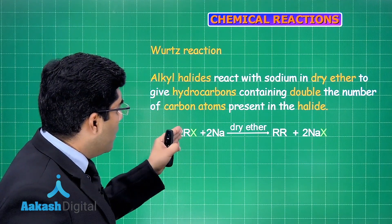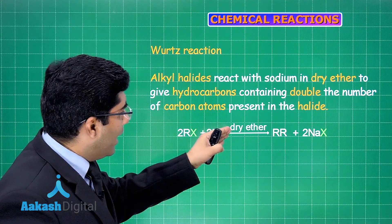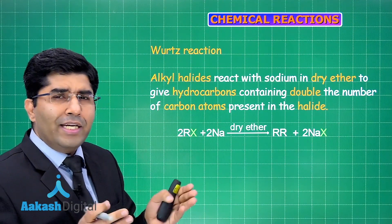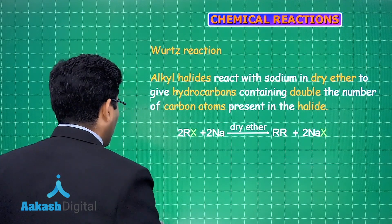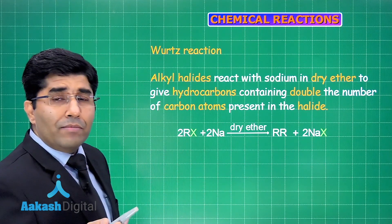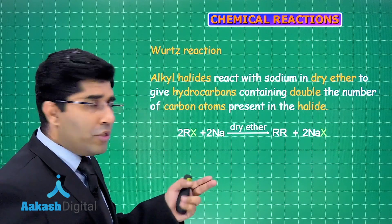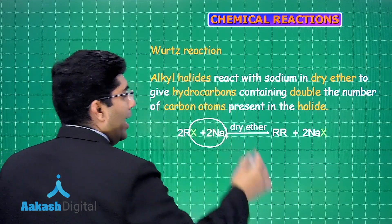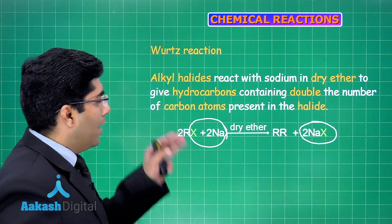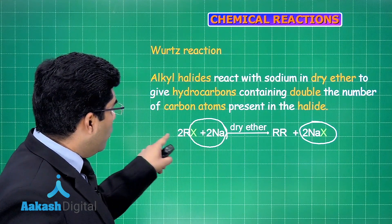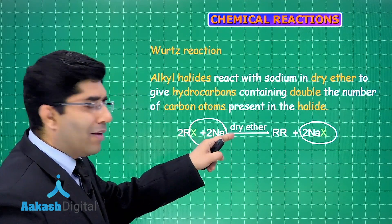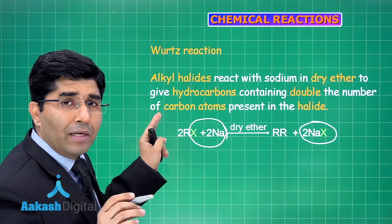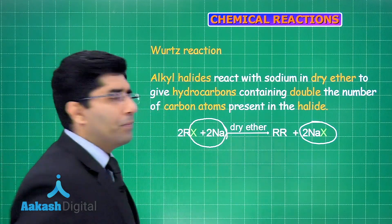The Wurtz reaction can be represented as: 2RX + 2Na → R-R + 2NaX in the presence of dry ether. Two moles of sodium react with two moles of halogen to give two moles of NaX, and the two alkyl groups combine to give an alkane having double the number of carbon atoms that were present in the alkyl halide.